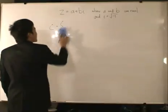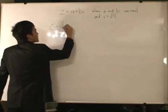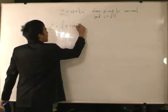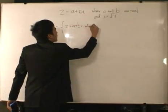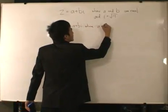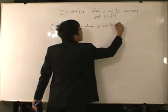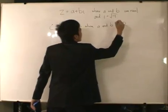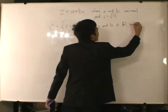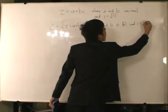I'll write a bracket here. Z equals A plus Bi, where A and B belong to the real set, and i is equal to square root of minus one.